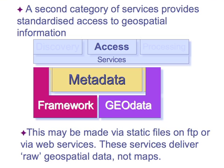The second major category of services provides for standardized access to geospatial information. This can be by static files on FTP or HTTP, but more increasingly and preferably these are made available through web services. These access services deliver raw data, not maps.